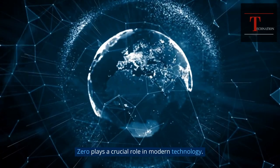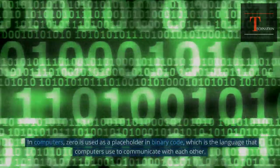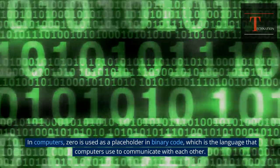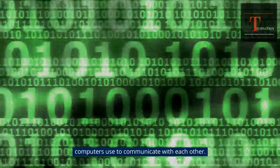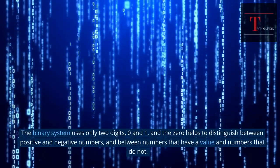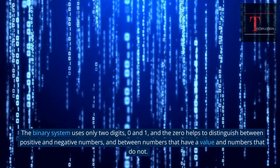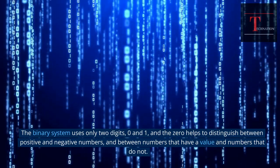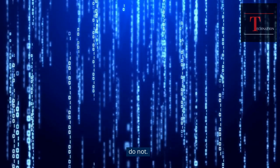Zero plays a crucial role in modern technology. In computers, zero is used as a placeholder in binary code, which is the language that computers use to communicate with each other. The binary system uses only two digits, zero and one, and the zero helps to distinguish between positive and negative numbers, and between numbers that have a value and numbers that do not.